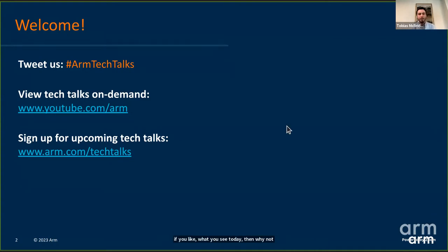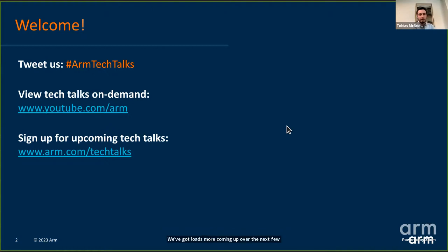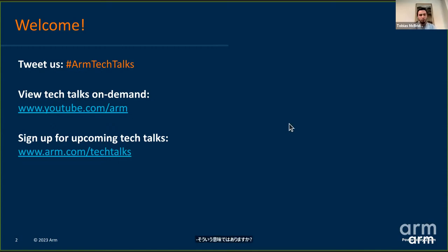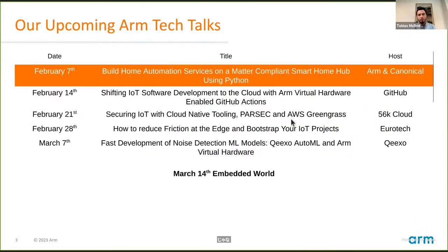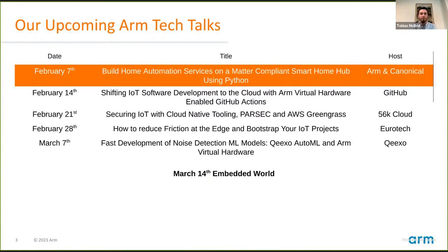All of our upcoming Tech Talks are on ARM.com slash Tech Talks. If you like what you see today, why not sign up for more? We've got loads more coming up. These happen every week at 4pm UK, 8am Pacific. Today, we're going to talk about how you can build a Matter-compliant smart home hub using Python and home automation services, with Sandeep from ARM and Nathan from Canonical.